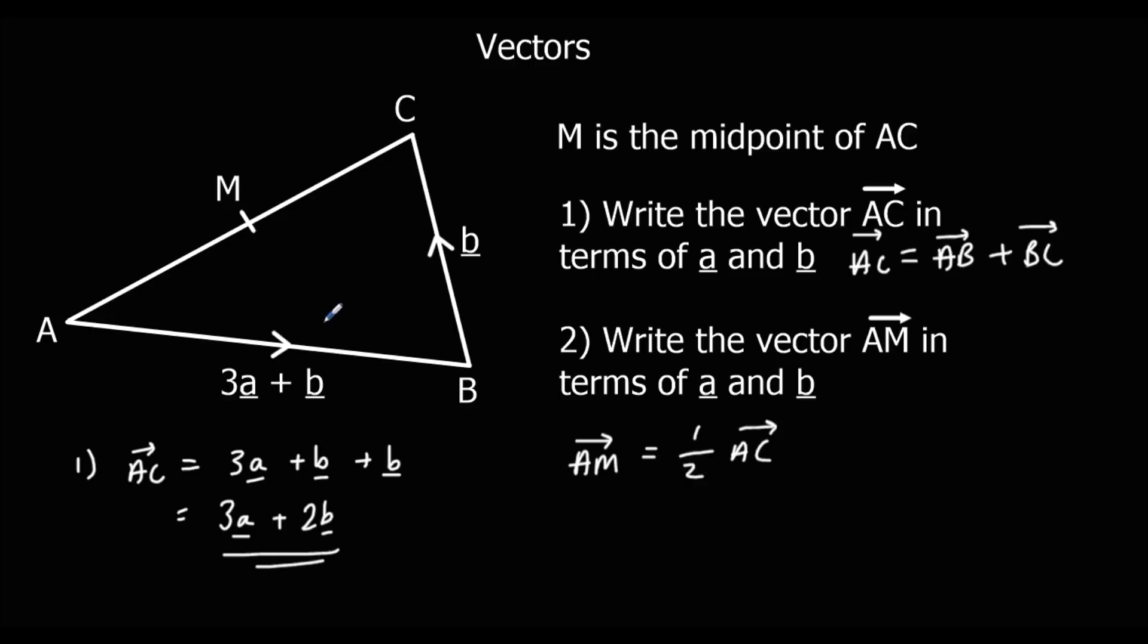A to M is half of A to C because it's the midpoint, and we have worked out A to C already. So it's half of 3a plus 2b.